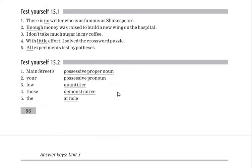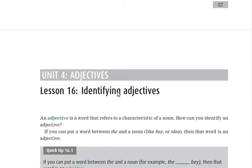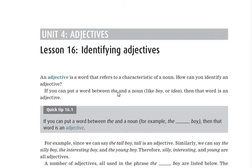This is the start of Unit 4. First, we will identify adjectives. An adjective is a word that refers to a characteristic of a noun. You already know what a noun is, and any word that describes the characteristic of a noun is called an adjective.